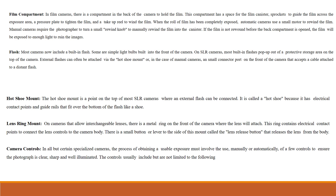Next is film compartment. In film cameras, there is a compartment in the back of the camera to hold the film. This compartment has a space for the film canisters, sprockets to guide the film across the exposure area, a pressure plate to tighten the film, and a take-up reel to wind the film.